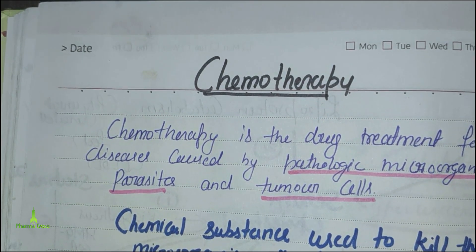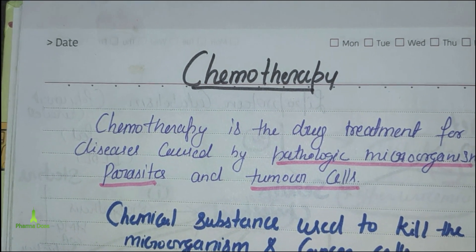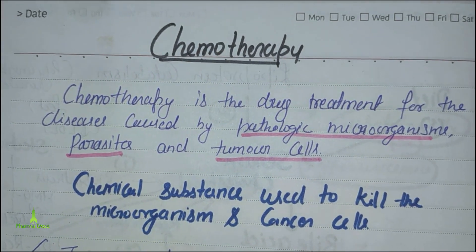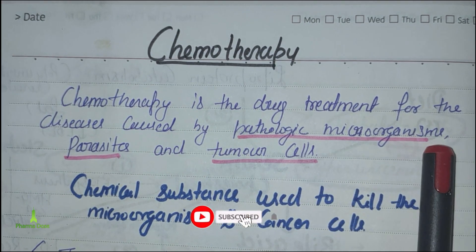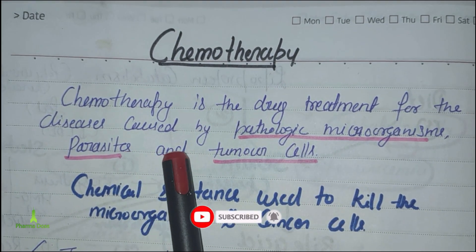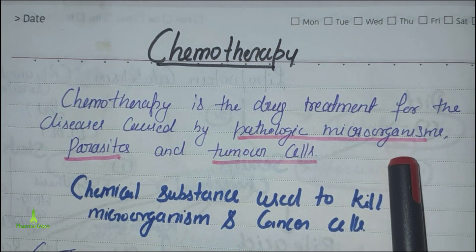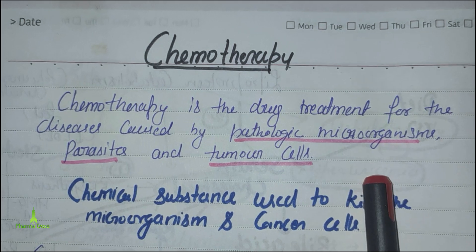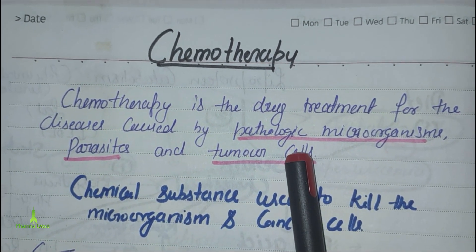Welcome students to our channel PharmaDoge. In this lecture we will describe chemotherapy. Chemotherapy is the drug treatment for disease caused by pathological microorganisms, parasites, and tumor cells. Pathology means disease-causing microbes.